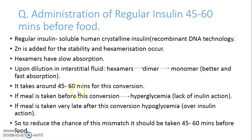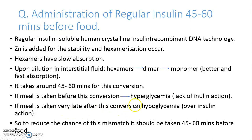There are two scenarios. If we take a meal before the conversion from hexamers to monomers occurs, there will be a lack of monomeric insulin, so insulin will not be able to act because of lesser formation of active monomers, and hyperglycemia may occur. The second scenario is if the meal is taken very late, then hypoglycemia may occur because more insulin is available but we are not taking food, causing over-action of insulin. To reduce the chance of hyperglycemia or hypoglycemia, we should take insulin just 45 to 60 minutes before food.